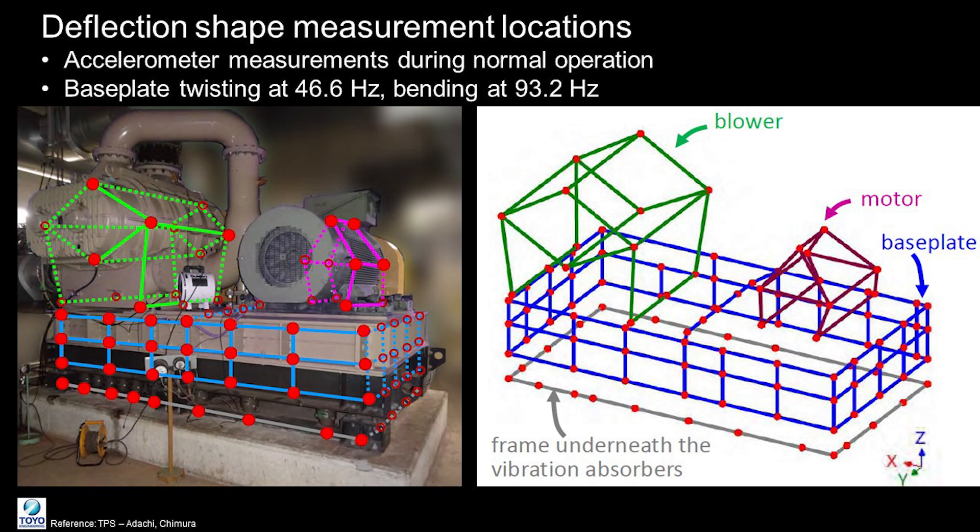To gain a deeper understanding of vibrational behavior, operating deflection shape measurements were conducted using accelerometers. The red dots in the diagram indicate the measurement locations, and the measurements found that the base plate exhibits twisting and bending motions at the excitation frequencies during normal operation.